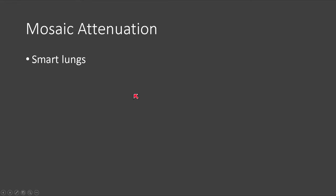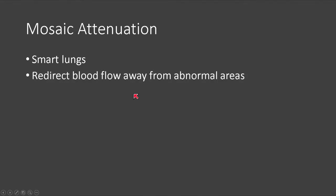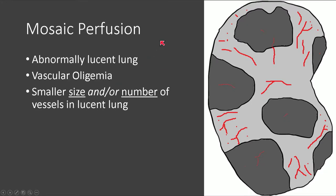Our lungs try to redirect blood flow away from abnormal areas, meaning vessels will be smaller in size in areas of abnormal lung parenchyma. Mosaic perfusion actually represents vascular oligemia. The reason why the lungs look lucent is because the vessels are too small and less numerous — that lung looks lucent because it's being underperfused and therefore appears blacker on CT.